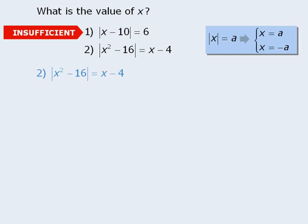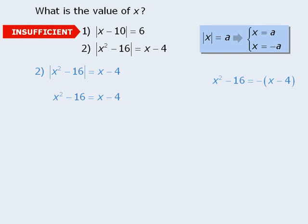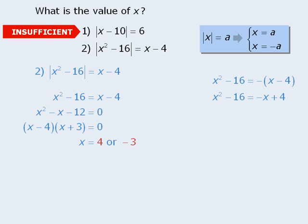We will apply the following rule to see that x squared minus 16 can equal x minus 4, or x squared minus 16 can equal negative x minus 4. To solve the first equation, we'll subtract x and add 4 to both sides, then factor the left-hand side. We find that x minus 4 times x plus 3 equals 0, giving x equals 4 or negative 3. To solve the second equation, we expand the right-hand side, add x and subtract 4 from both sides, then factor to get x minus 4 times x plus 5 equals 0, giving x equals 4 or negative 5.